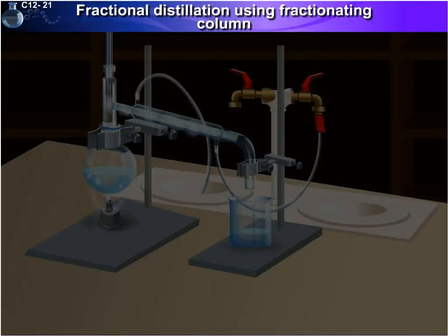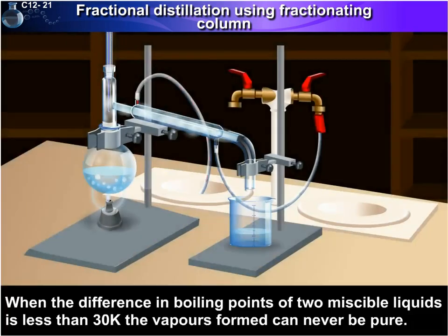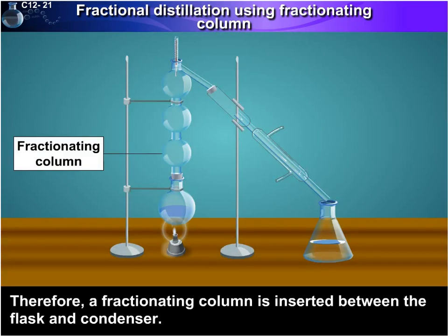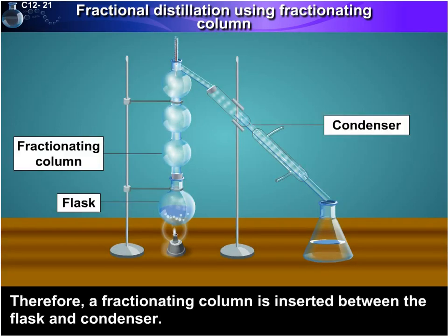Fractional Distillation Using Fractionating Column. When the difference in boiling points of two miscible liquids is less than 30 Kelvin, the vapours formed can never be pure. Therefore, a fractionating column is inserted between the flask and condenser.